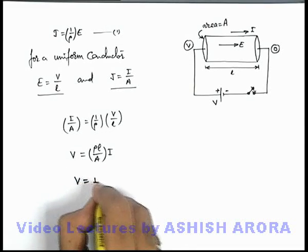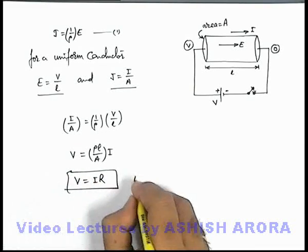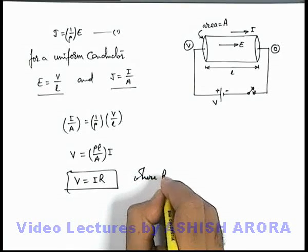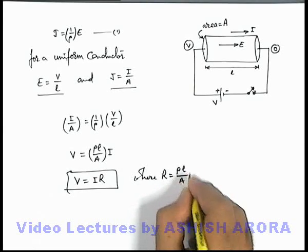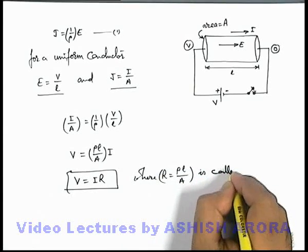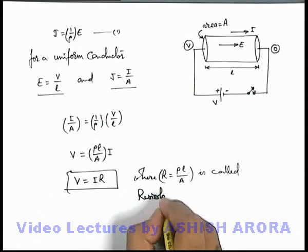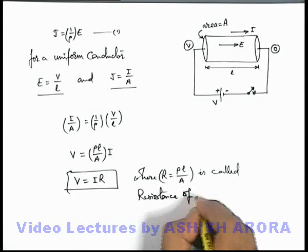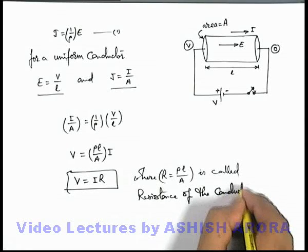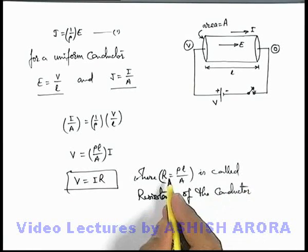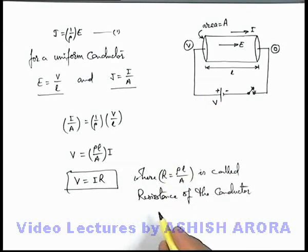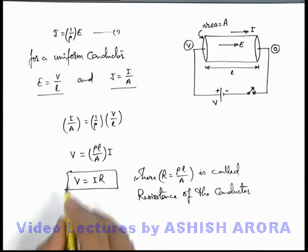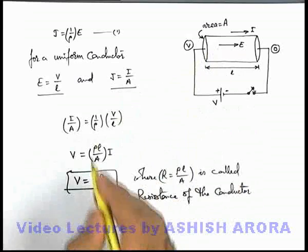This can be written as V = IR, where R is a constant given by R = ρL/A, and this is called the resistance of the conductor in which the current is flowing. This resistance depends on the dimensions of the conductor as well as its resistivity, which is a parameter that depends on temperature as well as its lattice parameters.